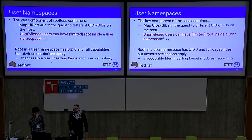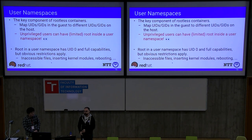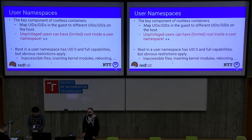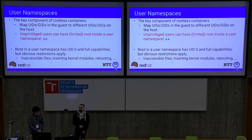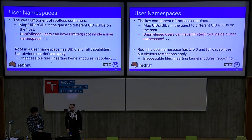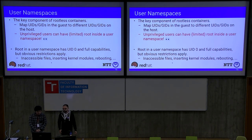Namespaces are the kernel feature that allows us to have containers — they give a process a different view of the file system or the network stack compared to the host. The user namespace is the most interesting one because it enables scenarios like rootless containers. What the user namespace does is create a mapping of IDs from the host — or more generally from the parent user namespace, since you can have a nested tree — to the process running in the rootless environment.